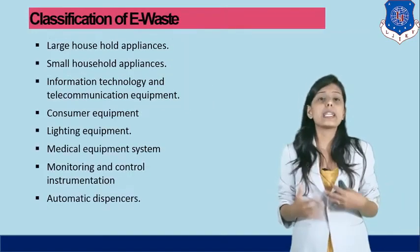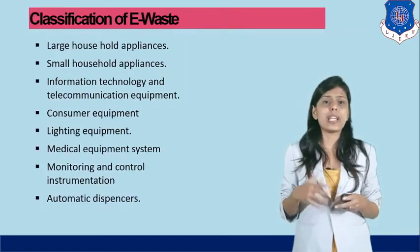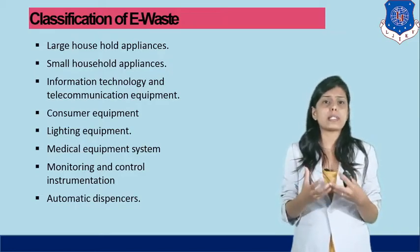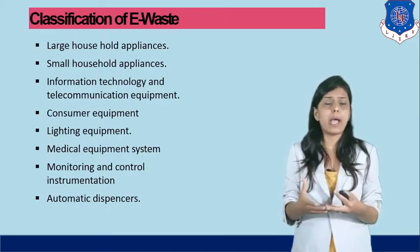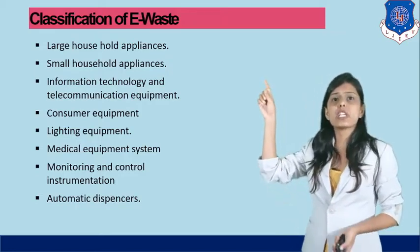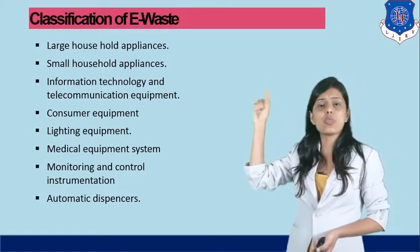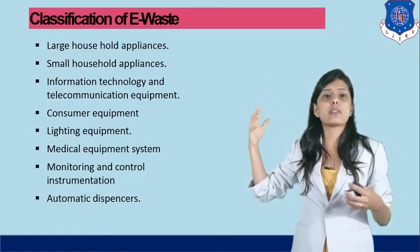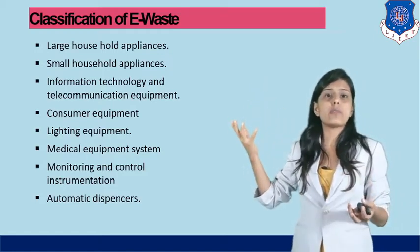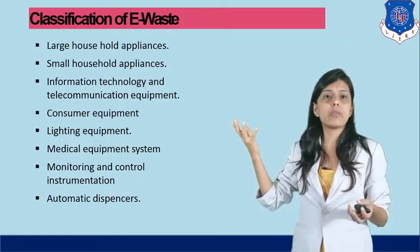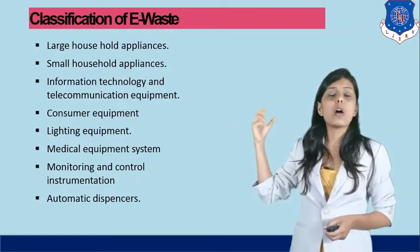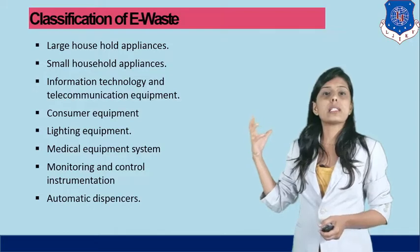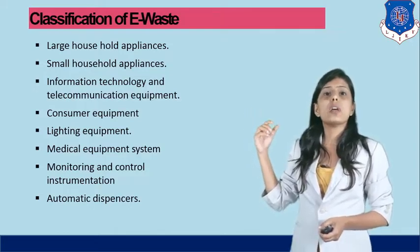So how can we classify electronic waste? There are different sources from where electronic waste is emitted into the environment. The first classification is large household appliances — for example, a refrigerator is electronic waste because it is made of electronic equipment. Small household appliances such as mixers are also known as electronic waste.